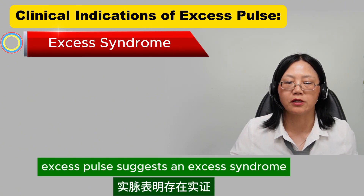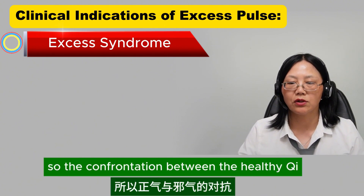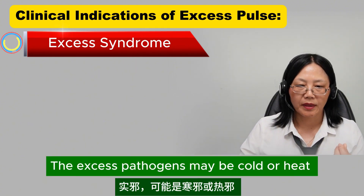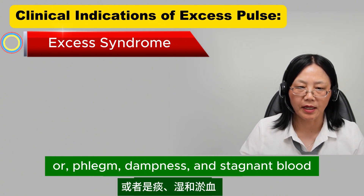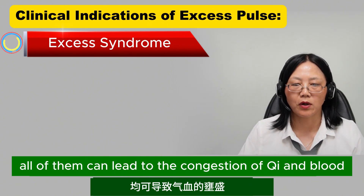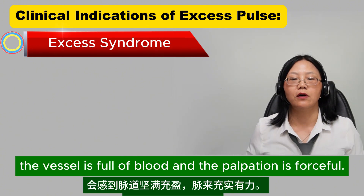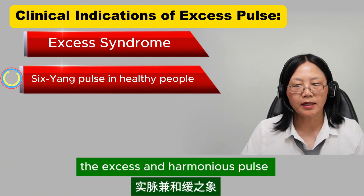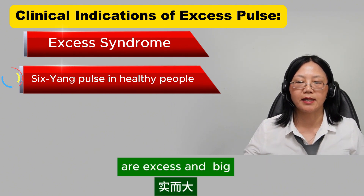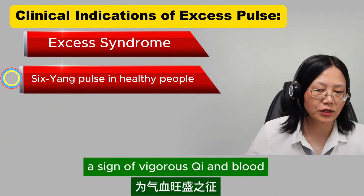Excess pulse suggests excess syndrome. The pathogenic factors are exuberant and the healthy qi is not deficient, so the confrontation between the healthy qi and the pathogen is intensive. The excess pathogens may be cold, heat, phlegm, dampness, or stagnant blood — all can lead to congestion of qi and blood. When taking the pulse, one will feel the vessel is full of blood and the pulsation is forceful. The excess and harmonious pulse can be seen in healthy people. If all six portions are excess and big without any manifestations of disease, it is called the six yang pulse, a sign of vigorous qi and blood.